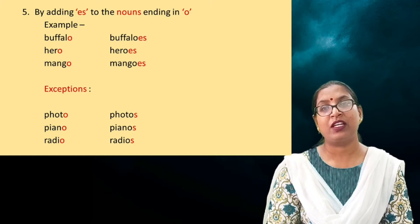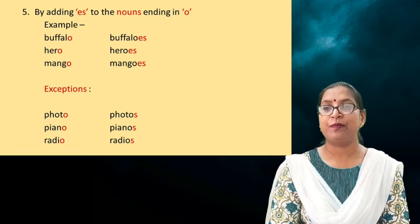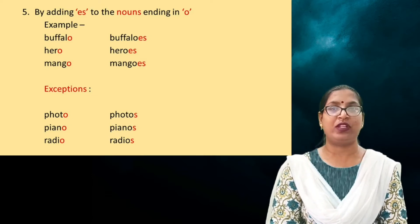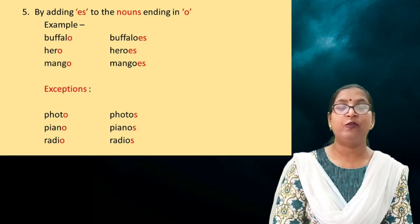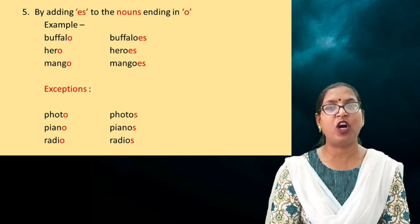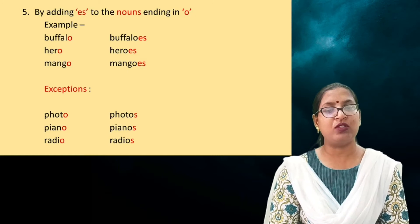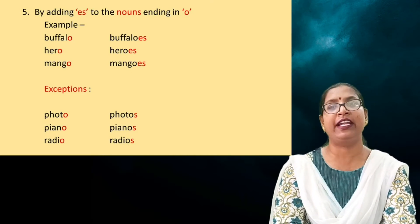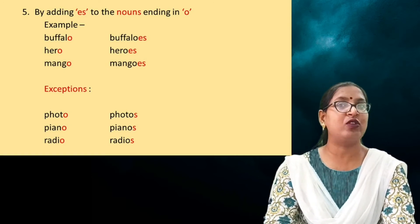But there are exceptions. In some words this rule is not applicable — though the words end in O, we do not add ES; we just add S. For example, 'photo' — P-H-O-T-O — plus S becomes 'photos'. 'Piano' becomes 'pianos'. 'Radio' becomes 'radios'. In all these examples, though the words end in O, we have used only S. Dear children, these kinds of words we need to memorize.